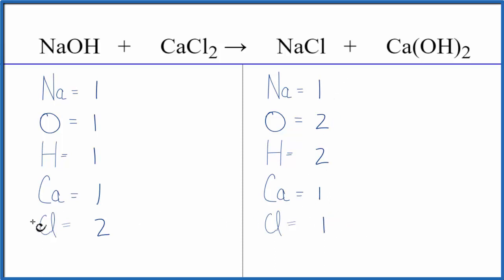Let's start by balancing the chlorines here. We have one here and two here. If we put a coefficient of two, two times the one chlorine, that gives us two chlorines.